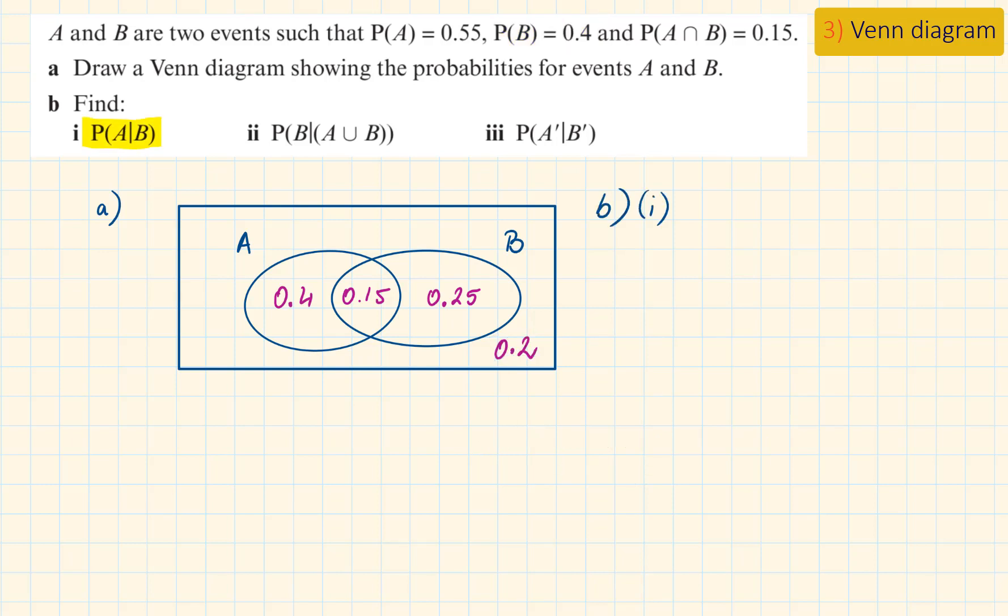Part B. Find the probability of A given B has happened. We are looking at the world of B, and that is 0.4. That will be our denominator. Looking at the Venn diagram, the intersection of A and B is 0.15. This will be the numerator of the fraction. So the probability will be 0.15 over 0.4, which is 15 over 40. We don't need to simplify it.